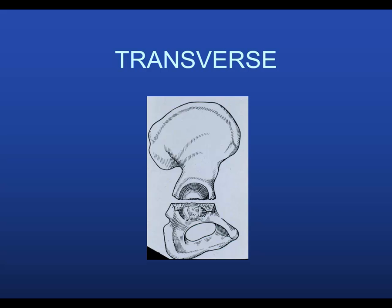When you're talking about the anterior and posterior columns, the pelvis is oriented this way, and this is how I think you should think about acetabulum fractures when classifying. Pick up a model, look at it laterally, tilt it until you have that U going this way, with everything on this side being posterior and everything here being anterior.